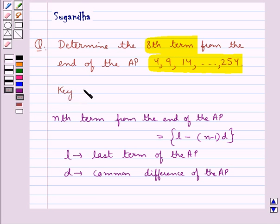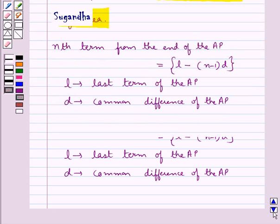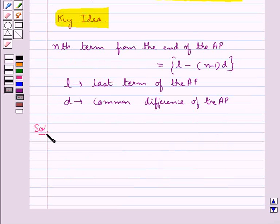This is the key idea that we use in this question. Now let's see the solution. The AP given to us is 4, 9, 14 and so on up to 254.